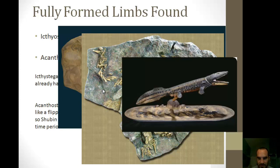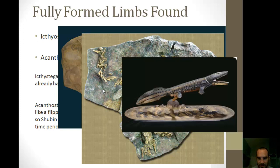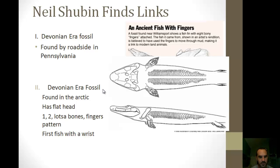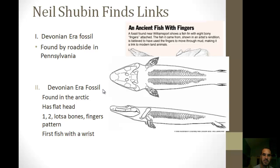Neil Shubin's finds are in Devonian-era fossils. His first search was along the Pennsylvania roadside, where he found a kind of shoulder girdle. He then continued looking in the Arctic area of Canada, where he found a specimen with a flat head, the one-bone, two-bone, lots-of-bones, fingers pattern — the very first fish with a wrist, meaning it was spending a lot of time on land and had to be able to support its own weight. This is the actual fossil specimen of the Tiktaalik that they found.